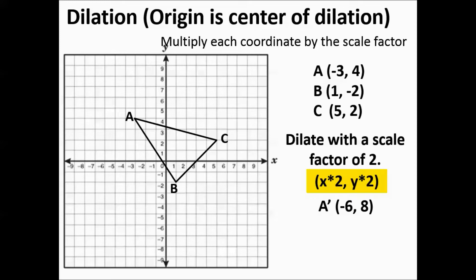Multiply point B, multiply those coordinates by 2, 1 times 2, negative 2 times 2, and then point C, 5 times 2, and 2 times 2. So it's going to be 10, 4.